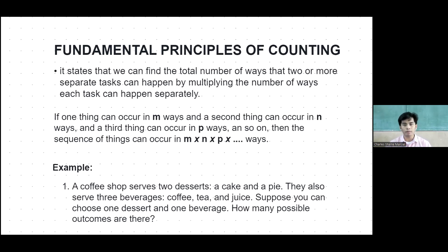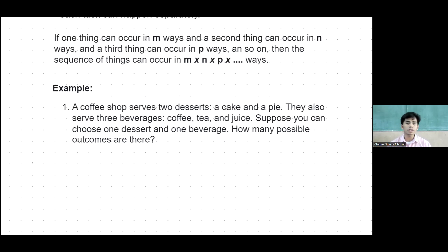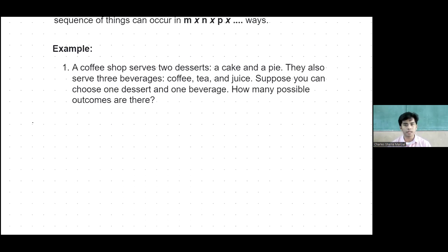For example, a coffee shop serves two desserts — a cake and a pie. They also serve three beverages which are coffee, tea, and juice. Suppose you can choose one dessert and one beverage, how many possible outcomes are there?